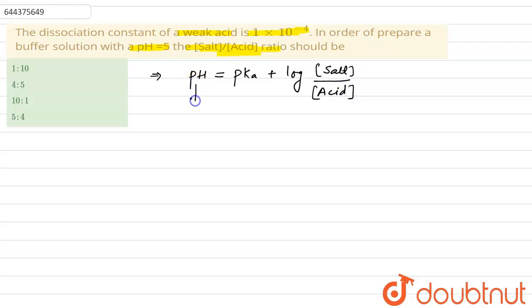Now pH is given as 5. We have to find out pKa. The Ka is given as 1 into 10 to power minus 4.